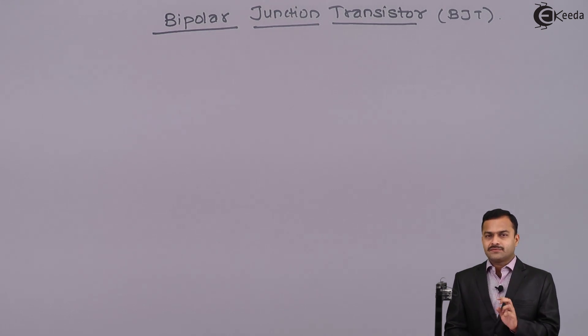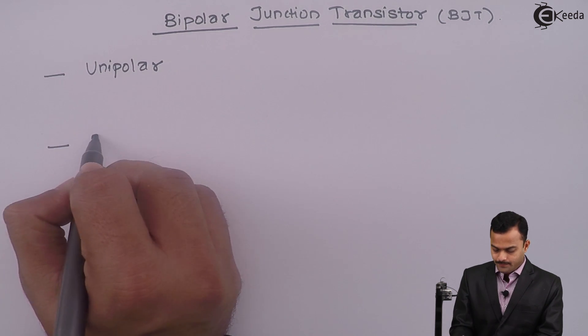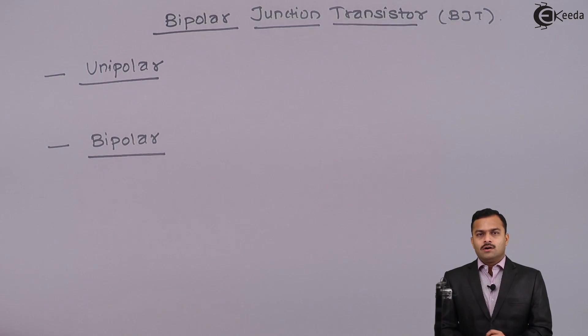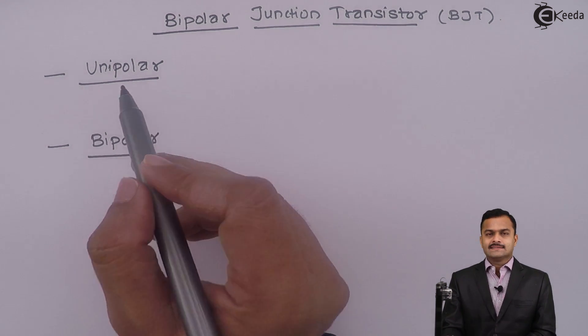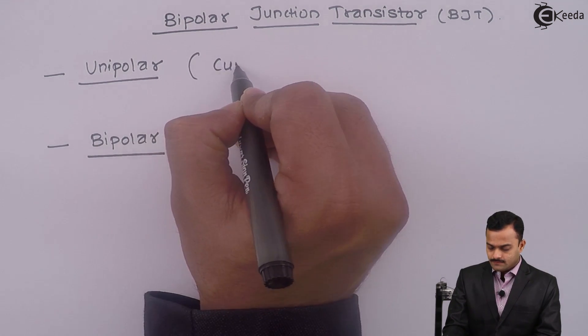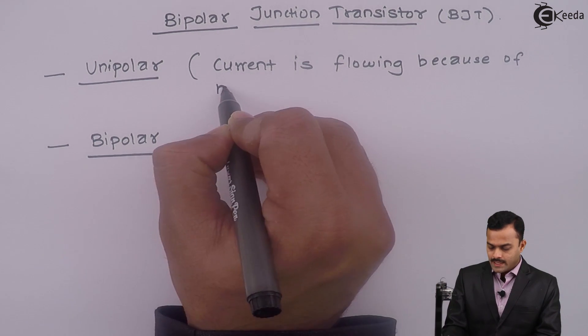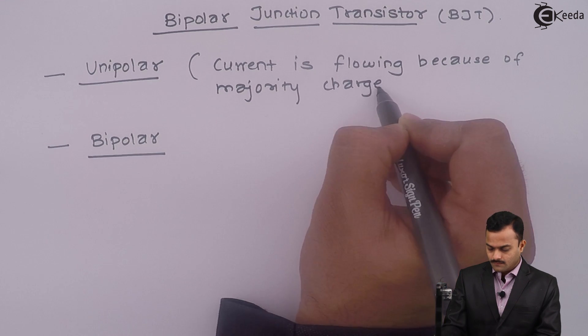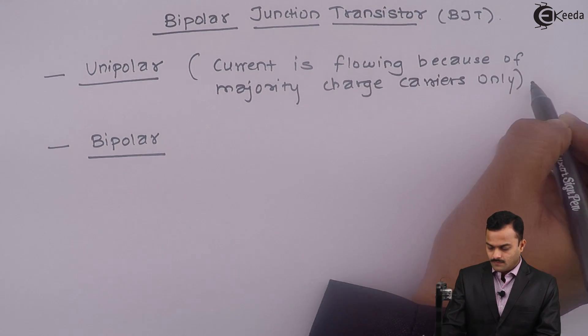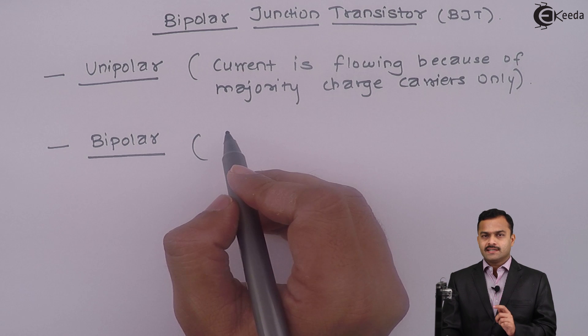There are two types of transistors: unipolar and bipolar. Depending upon who is carrying the charge or current, the transistors are named unipolar and bipolar. In unipolar, current is flowing because of majority charge carriers only, whereas in bipolar, current is flowing because of both charge carriers, majority and minority.